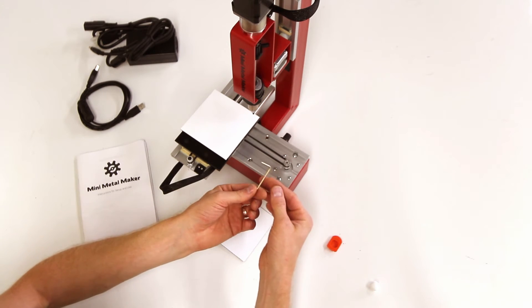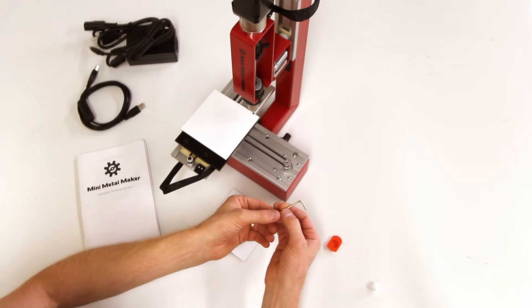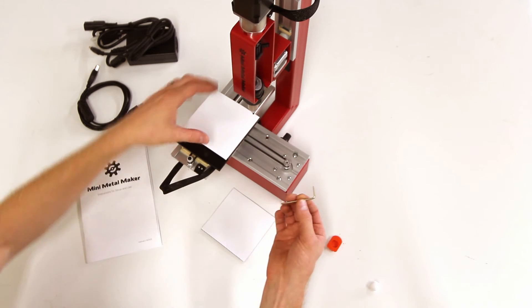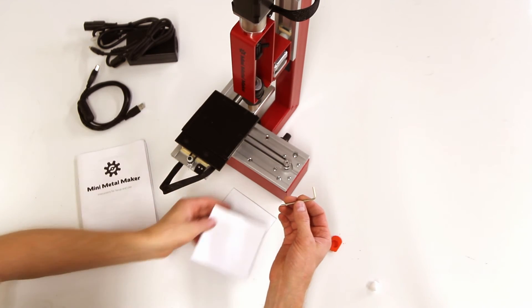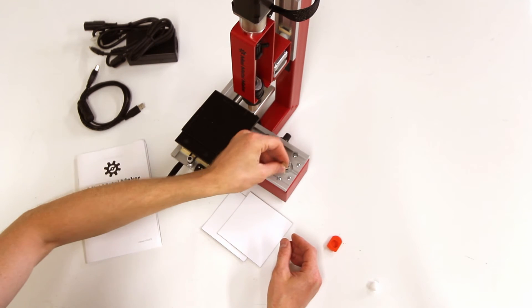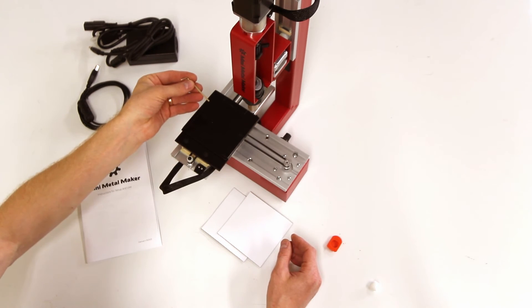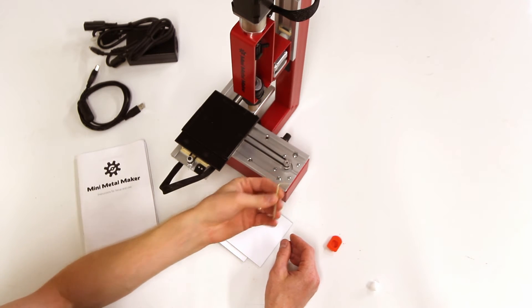The last thing is the Mini Metal Maker will come with a 2.5-millimeter Allen wrench or little hex key. This is important. It's actually the only tool you'll need to adjust anything on the Mini Metal Maker, and really the main thing you'll adjust is the leveling.